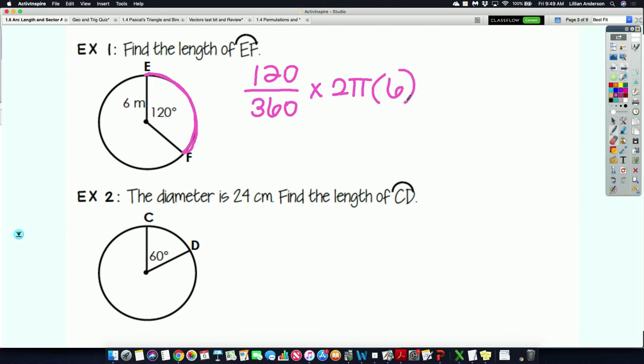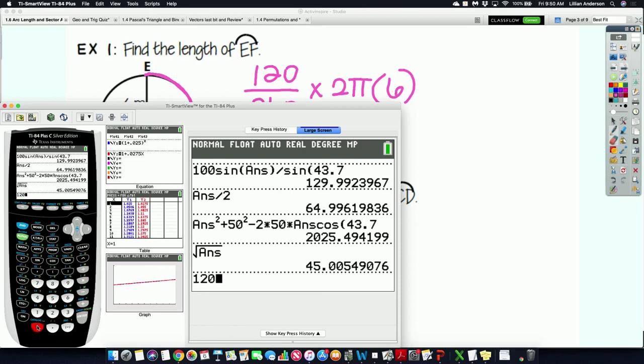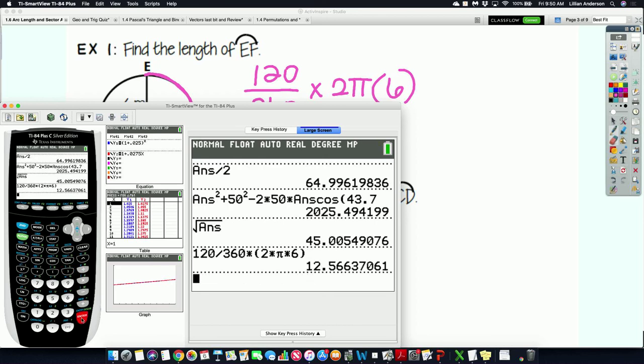And we go straight into our calculator, and we type that in. Everybody knows how to get the pi button? You press the second button, and then you press the caret button. We do not use 3.14. We use the pi button. It gives you the full thing. Times your radius. So second, the caret, which is right above your division symbol, to get the pi button. Did everyone get this? So what is the length of my arc?